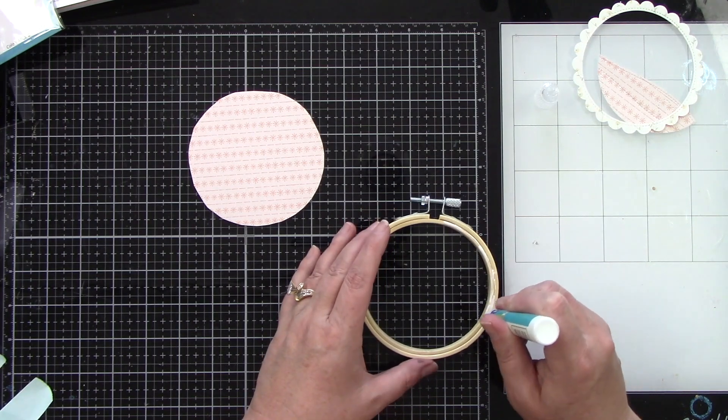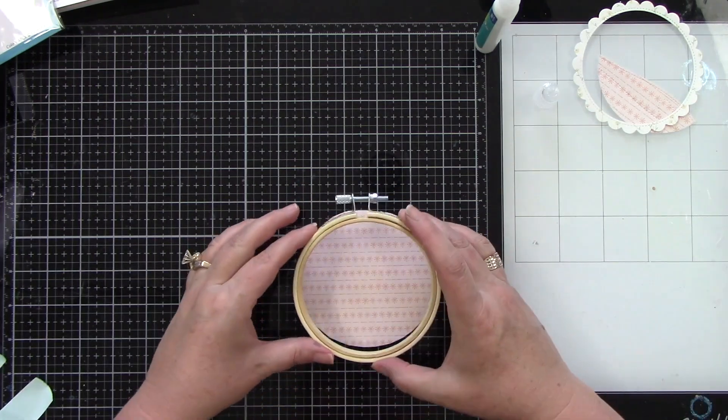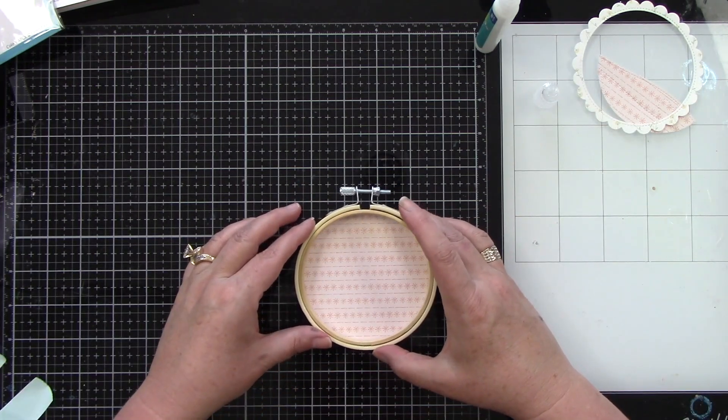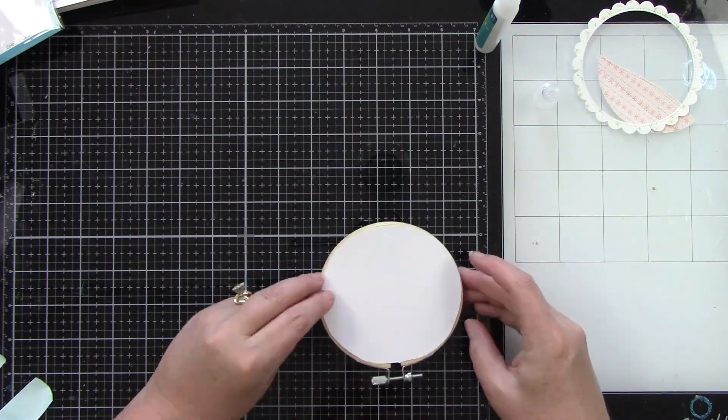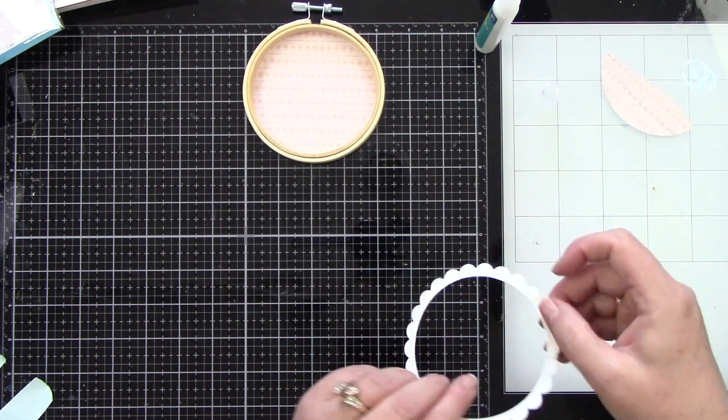Now I want to adhere that back piece of cardstock and I just hand cut that with scissors which is why it looks a little bit wonky but it fits totally perfect. I added some liquid glue to the back and then adhered that down and I want to set that aside to dry.